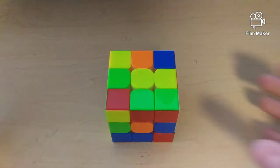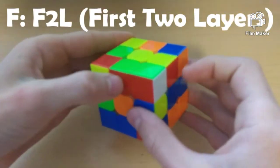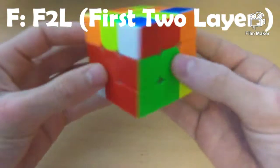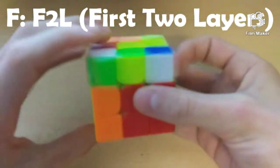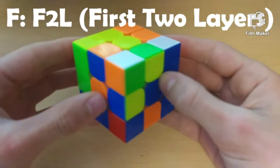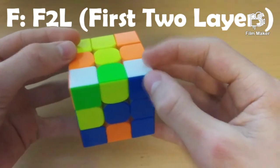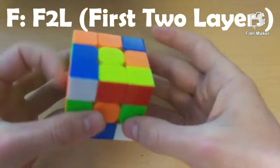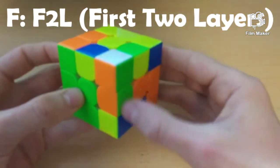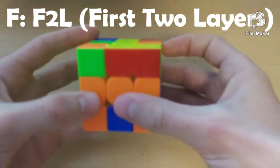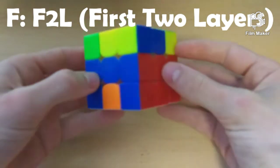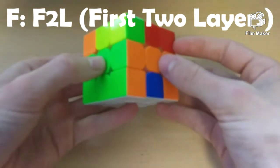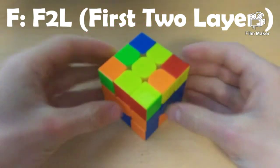So now, ignoring the messed up cross, we will do F2L like normal. So, here is a pair already. I am going to go insert that. See, here is a second pair. And here is a third pair. And here is the last pair. So, just like as followed, F2L is just the same as CFOP.